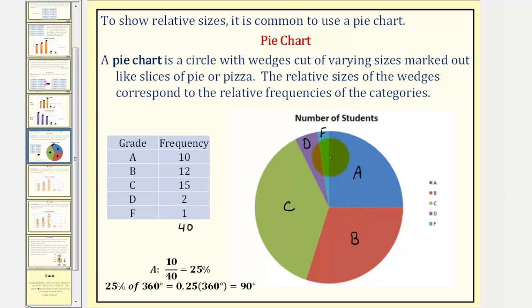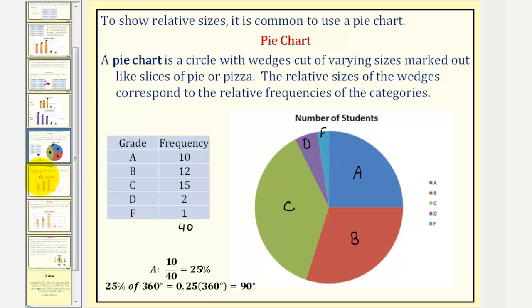The last graph we'll take a look at is called a pictogram. A pictogram is a statistical graph in which the size of the picture is intended to represent the frequencies or size of the values being represented. And there are some variations of pictograms. Notice here, instead of bars, we're using pictures of A's, B's, C's, D's, and F's.